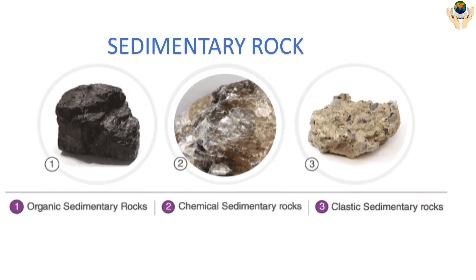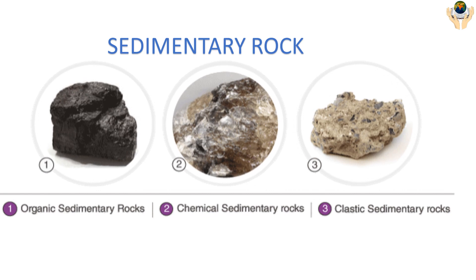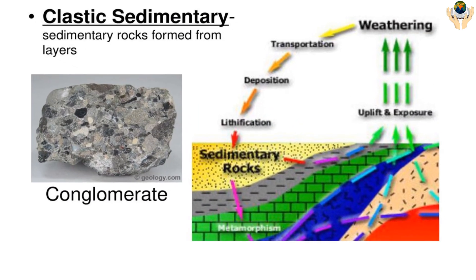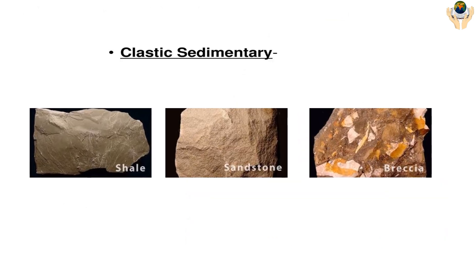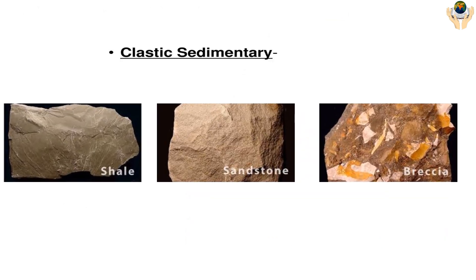There are three types of sedimentary rock: organic, chemical, and clastic. Clastic sedimentary rocks are formed from abundant deposits of loose sediments found on the earth's surface. They are the most common type of sedimentary rock and are classified by their grain size. Examples of clastic sedimentary rocks include shale, sandstone, and breccia.